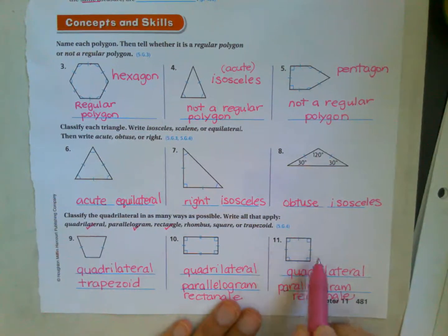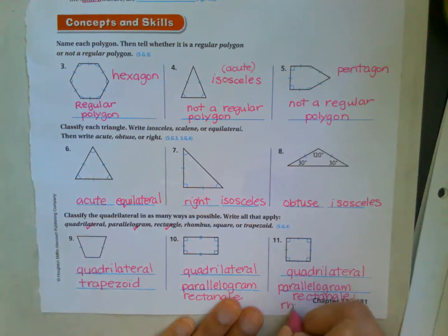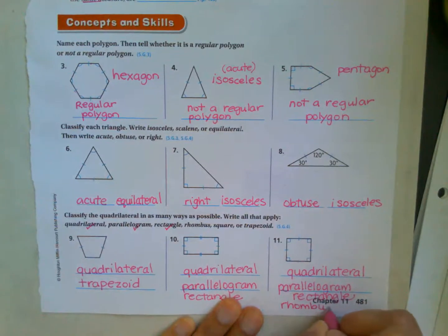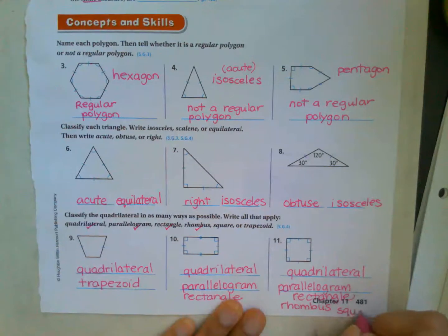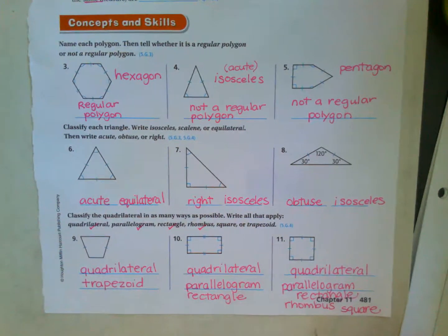Now, 11 is our square, right? Four congruent sides. Four congruent sides means it's a rhombus. And we know from our lesson that a square is always a rectangle and a rhombus. So number 11 gets all the names except trapezoid. And number 9 is just our trapezoid quadrilateral. 10 is quadrilateral parallelogram rectangle. And 11 is quadrilateral parallelogram rectangle rhombus square.